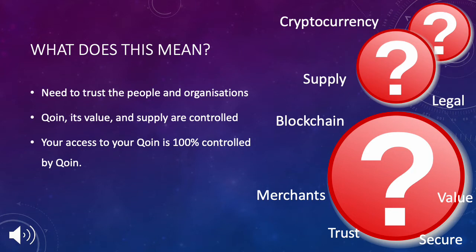What does this mean? It means that everyone in the coin network must trust that the coin association will do the right thing all the time. It means that coin, its value, its supply, and your access to your coins are 100% controlled by one entity. Now ask yourself: how does this compare to every other cryptocurrency in the world?